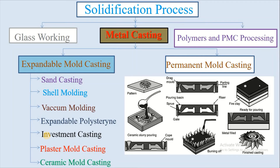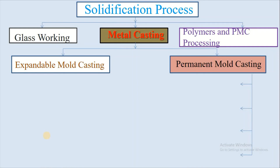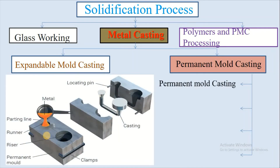These are the expandable mold casting processes. The next metal casting category is permanent mold casting. In permanent mold casting, a large number of castings are produced using a single reusable mold. The process simply involves pouring molten metal into the mold where it cools and solidifies, the mold is then opened, the casting is removed, and the mold is reused. Common permanent mold parts include gears, automotive pistons, and car wheels.